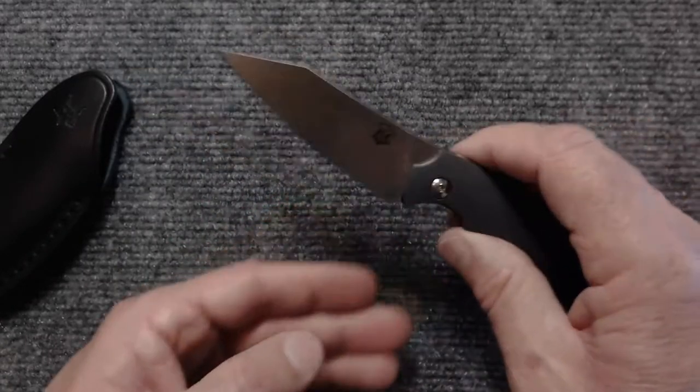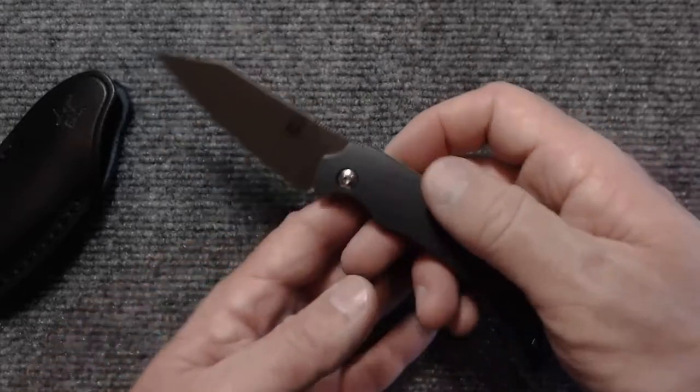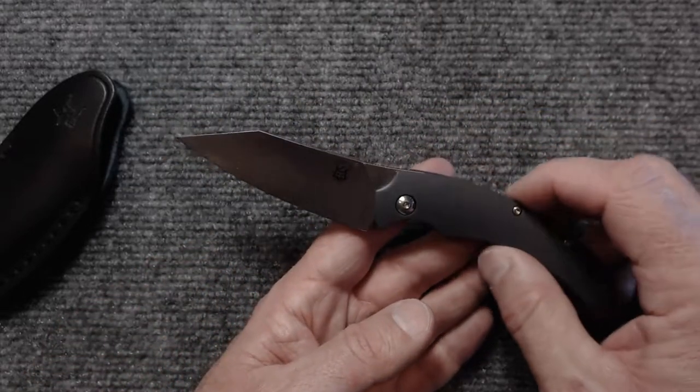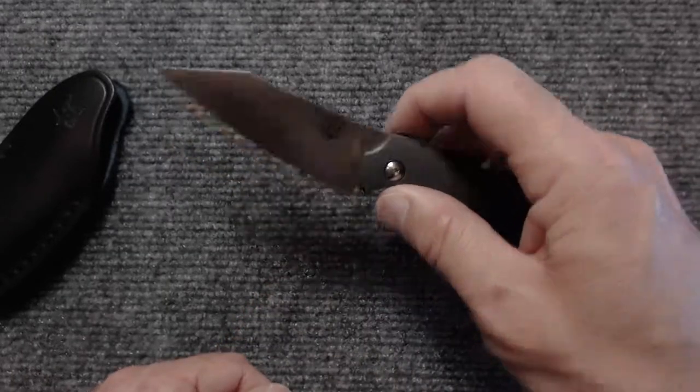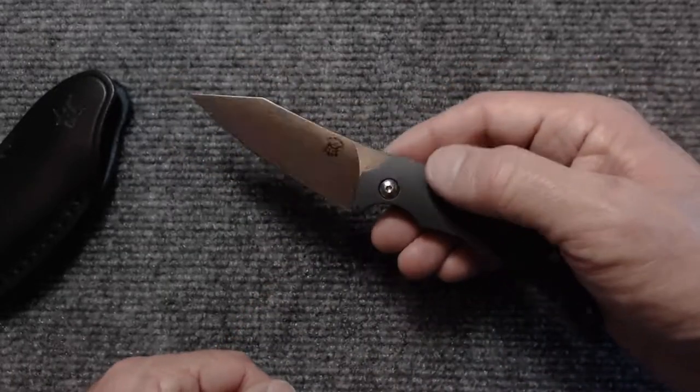So anyway there it is, it's the Fox Bastinelli Design Dragotac Slim Piemontes Friction Folder. They make another one too that's a little bit wider which I think is why this one is designated the slim.